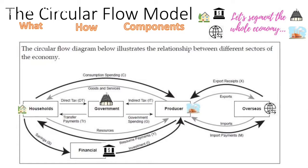The whole model shows us the relationship between the sectors, and all the different arrows are showing us those relationships. For example, from households to producers at the top, we can see that households spend money — there's a little C next to consumption spending. When households spend money at a store, they receive a good or a service in return. The black lines always represent money flows, and the grey lines we call real flows — that's the exchange of goods and services, the tangible item.